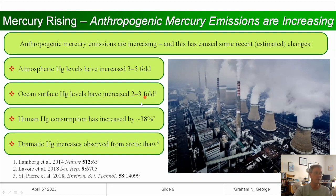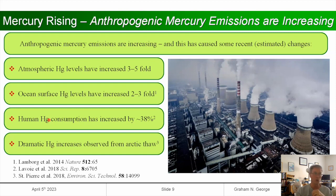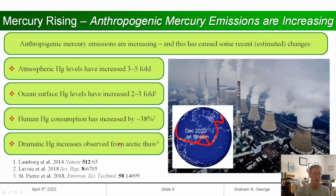Ocean surface mercury levels have increased two to three fold. Human mercury consumption: 38% of people worldwide are now consuming more than the WHO safe limit for mercury. There are also dramatic mercury increases from the Arctic thaw due to climate change. The jet stream carries mercury from northern China and northern India over North America, where it gets deposited through precipitation — so this burning affects us more than it affects Europe.